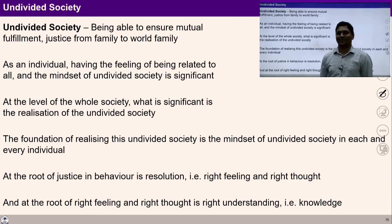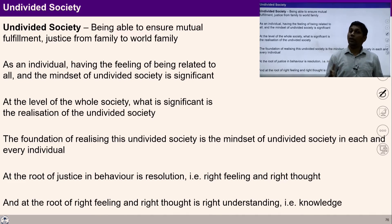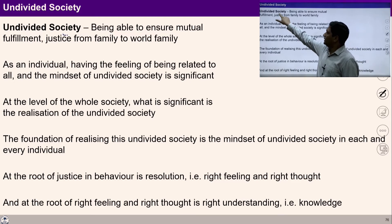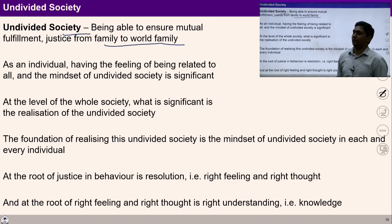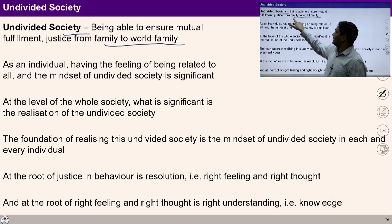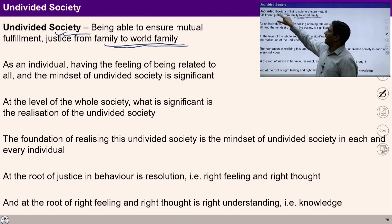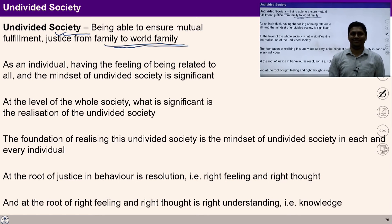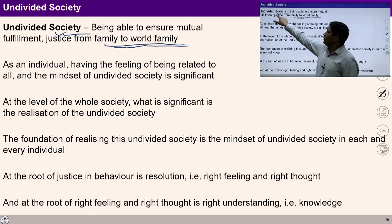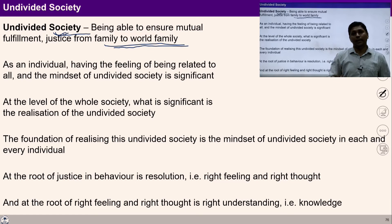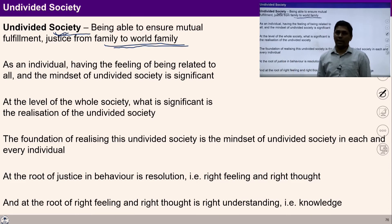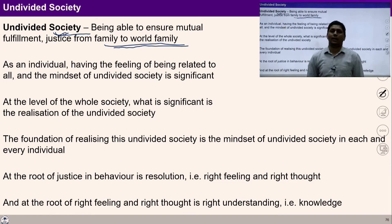Undivided society means to ensure mutual fulfillment in relationships and to ensure justice from family to world family order. If I ensure justice from family to world family order, it means I am with the mentality of undivided society. To reach the state of undivided society, the competence to ensure justice in everyone is required. If everyone goes through such education and sanskar where the ability to ensure justice is improved, then society will reach the state of undivided society.